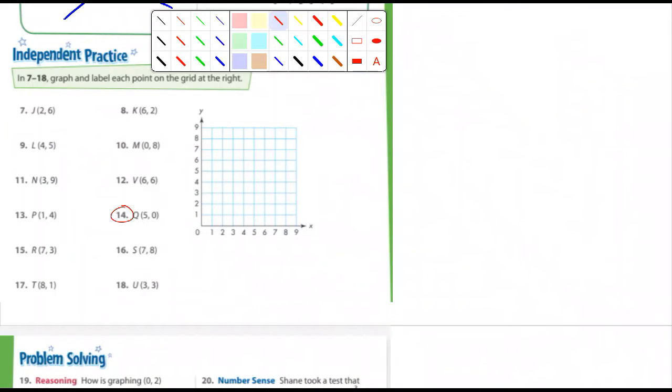All right. You guys are way ahead of the game. Well, just in case, I'm going to do number 14. So 14 is letter Q and it's five zero. Remember that X is listed first and the Y is always second. So I'm going to go over five and then up zero. So it just stays right there and I'll label that Q.